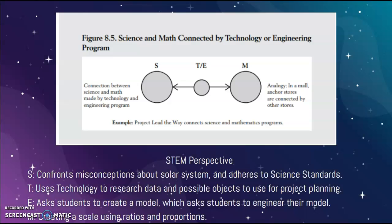For my STEM perspective, I thought of it as math and science being connected by technology and engineering. For science, I was mostly focusing on the planets as they are, and in math I focused on creating a scaled model using ratios and proportions to actually accomplish that. Students would use technology to help them research possible objects or data surrounding the distance and size of the objects, and the engineering is them actually creating the model.